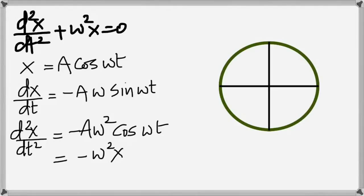When acceleration becomes maximum, velocity becomes zero — just like somebody trying to run away: when you exert maximum force on them they stop and come back. So in the physics class you must get the physical meaning, not just the math. In math you stop at the equation, but in physics you need to understand what it means.